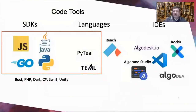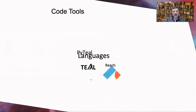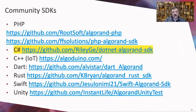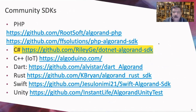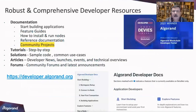There are a lot of tools being built by the developer community. There are official Algorand SDKs shown in red, and then community SDKs as well — Rust, PHP, Dart, C#, Swift, and Unity. The one we're focusing on is highlighted: the .NET Algorand SDK for C#.